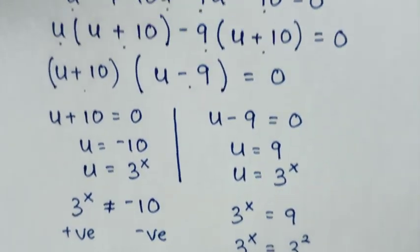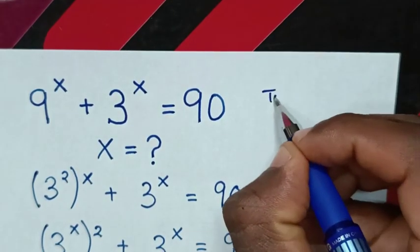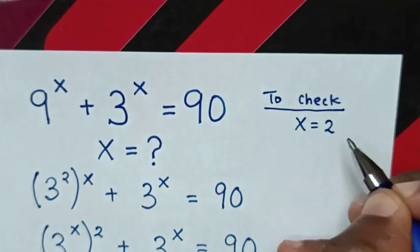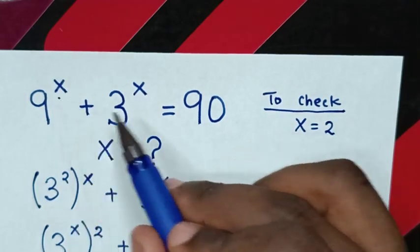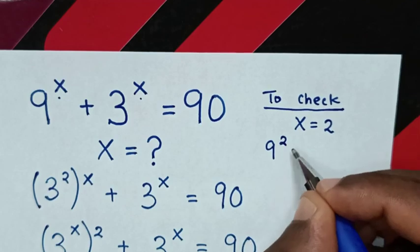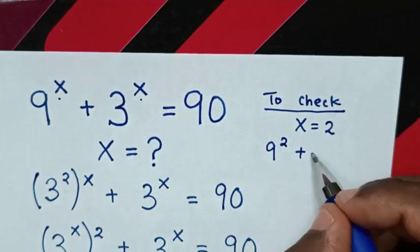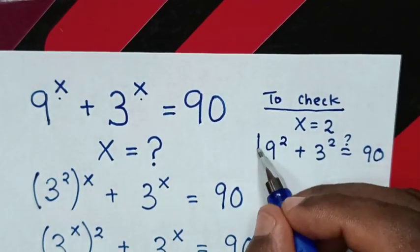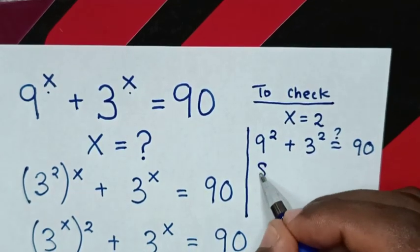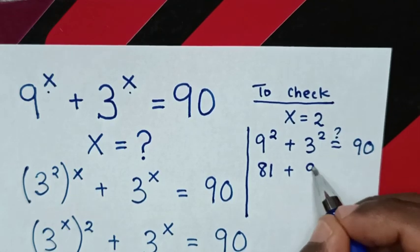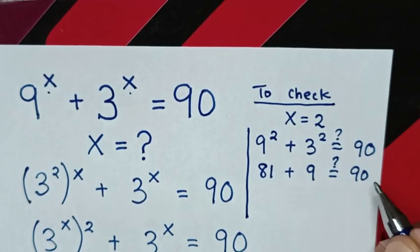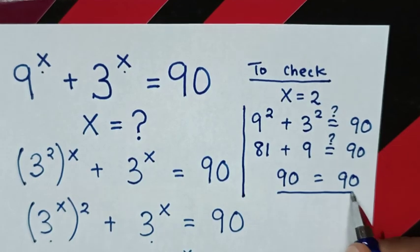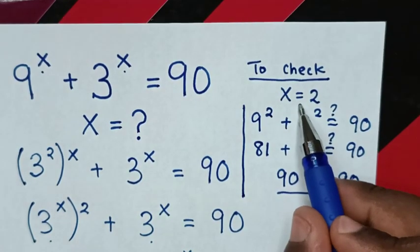Now to check if this answer is correct, we substitute x equal to 2 into the original problem. It will be 9 power 2 plus 3 power 2, is it equal to 90? Then 9 power 2 is 81, plus 3 power 2 is 9, is it equal to 90? Then 81 plus 9 is 90, which equals 90, therefore left side and right side are equal — true for x equal to 2.